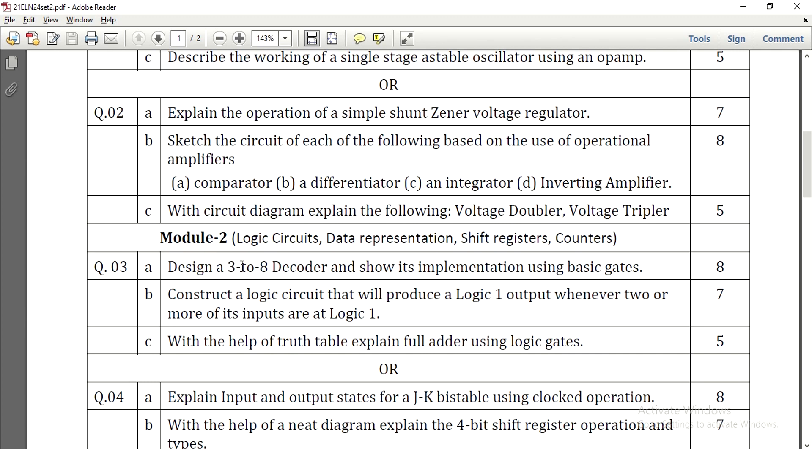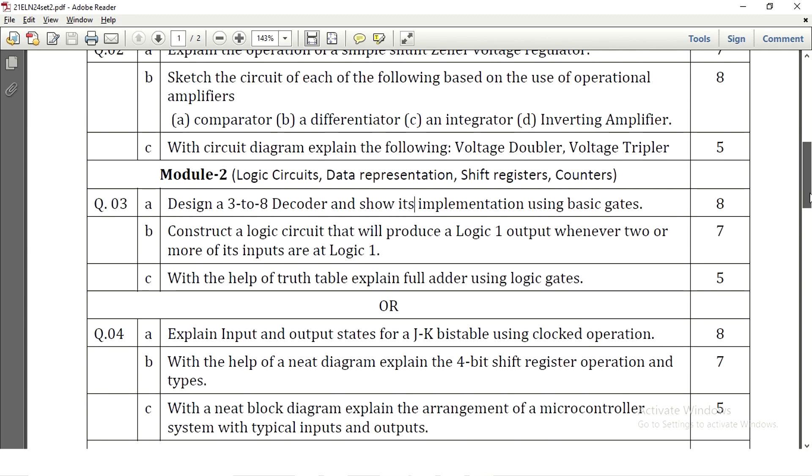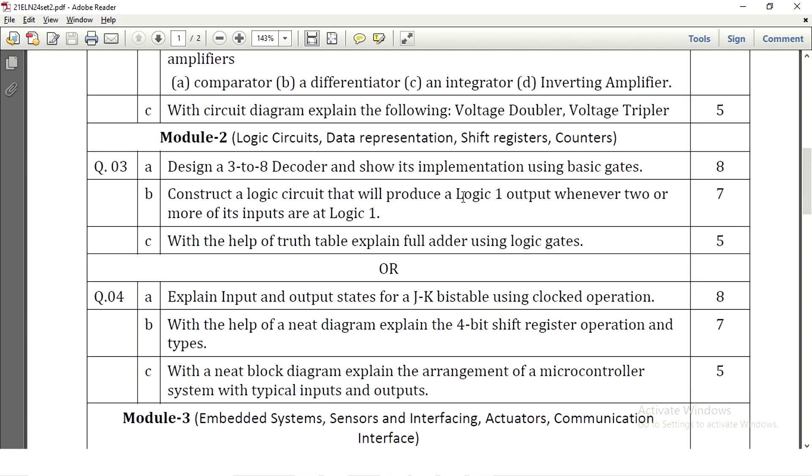The third question: design a 3 to 8 decoder, show its implementation using basic gates. So two implementations are there in our syllabus: 4 is to 1 mux and 3 is to 8 decoder. Those two are very important. Here 3 to 8 decoder is asked and asked to implement using basic gates. So basic gates structure, truth table, and the brief explanation need to be written. Construct a logic circuit that produce logic 1 output whenever 2 or more of its inputs are logic 1. This question will be answered while solving this question paper. In the separate video you can get to know how actually we can solve this. With the help of truth table explain full adder using logic gates. The full adder circuit need to be explained here with the truth table using logic gates. We need to write that circuit.